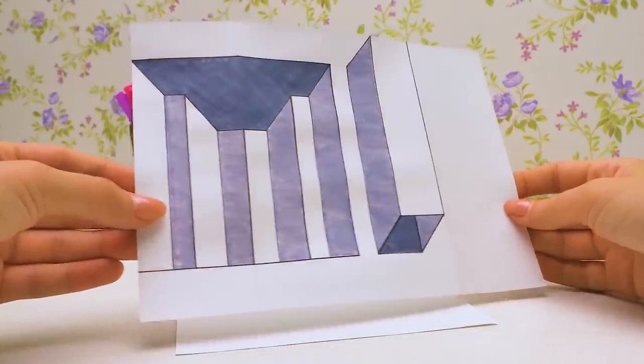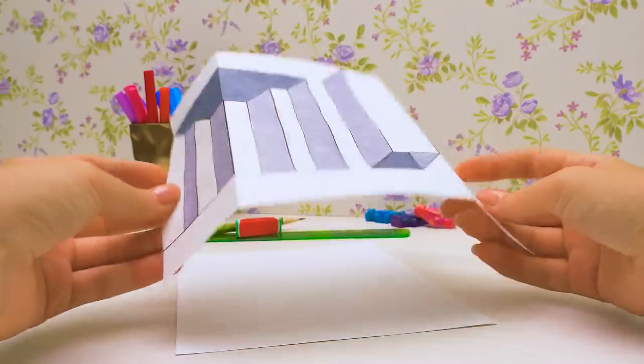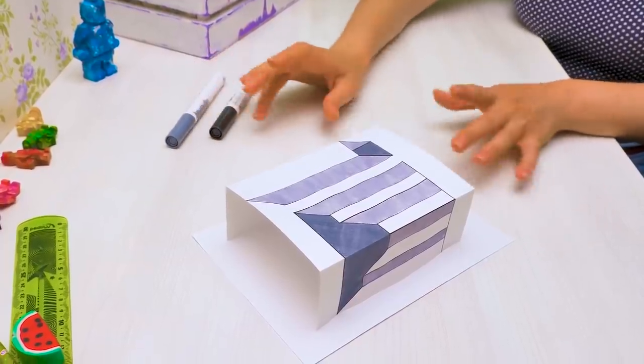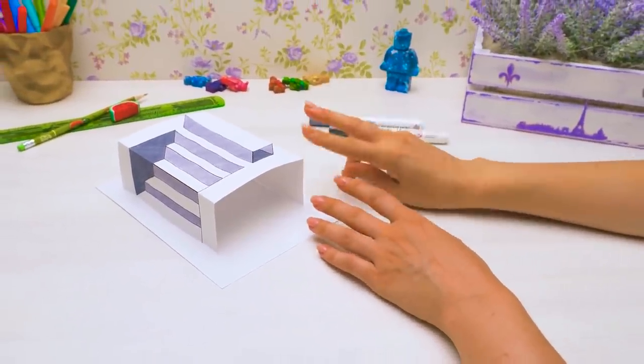Now here's a small secret. Let's fold the drawing along the line. One and two. And now it's time for some magic. Here's the result we've got with a combination of only two colors.